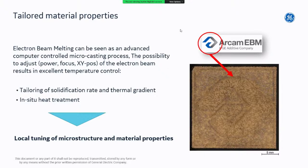With EBM, the fast-moving electron beam allows tailoring of material properties at a local level. By controlling everything from power to focus to beam location, and scanning the beam very rapidly, it is possible to precisely control the solidification rate and thermal gradients. As you can see on the left, this is a titanium-based material where the former Arcam logo is actually imprinted as a microstructure into the material — a very unique and cool way to utilize additive manufacturing.